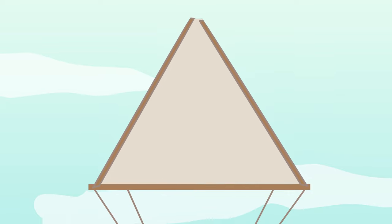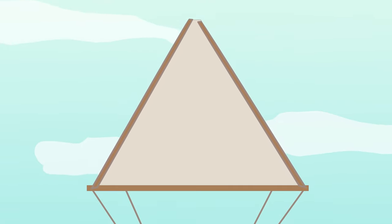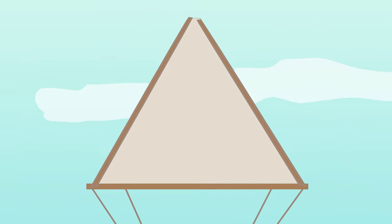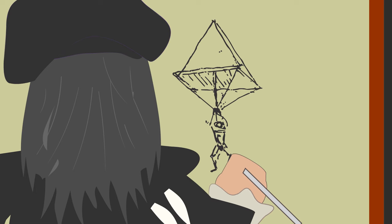The linen was to be supported by a wooden frame made up of a 12 by 12 yard square at the base with four poles rising to a central point. As with his other flying machines, da Vinci's parachute remained entirely conceptual throughout its lifetime.